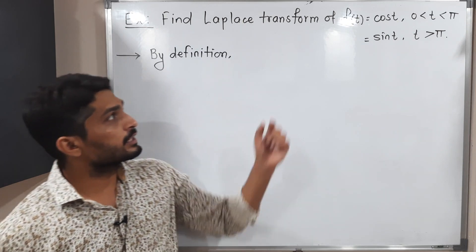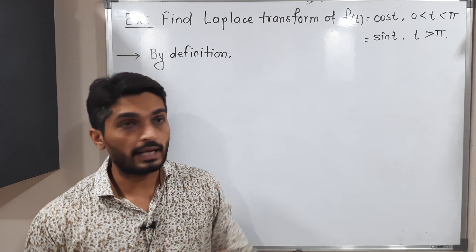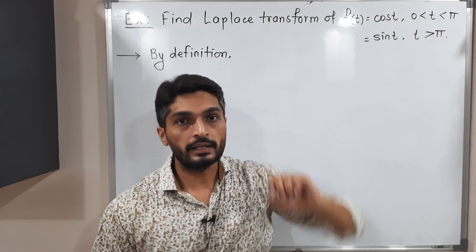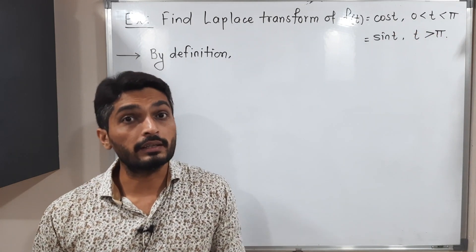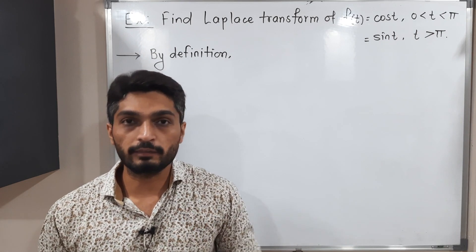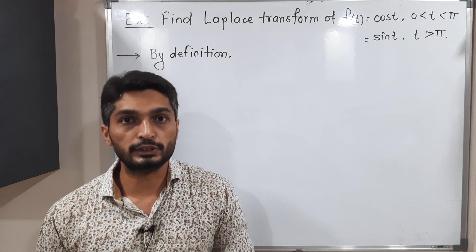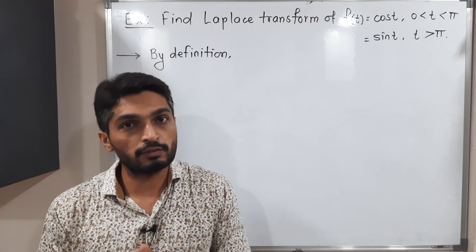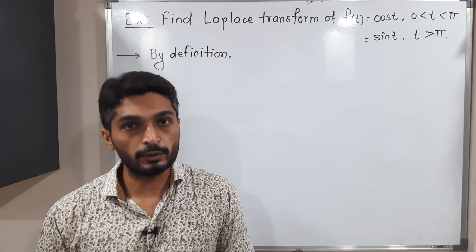We have the function f(t) equal to cos(t) when t lies in [0, π] and its value is sin(t) for t greater than π. The function has two different definitions and we have to find its Laplace transform using the definition.